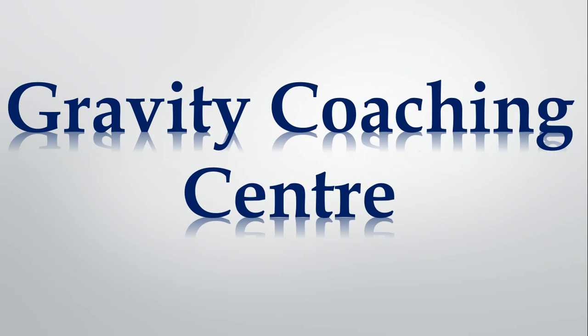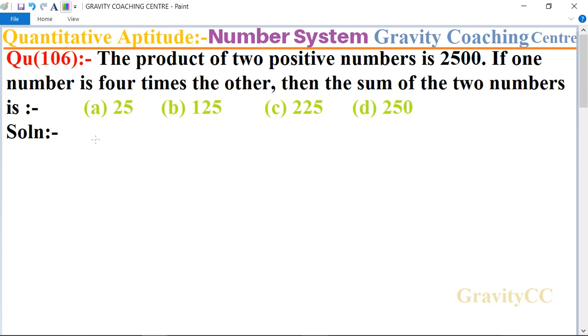Welcome to our channel Gravity Coaching Centre. Quantitative Aptitude, Chapter Number System, Question number 106: The product of two positive numbers is 2500. If one number is four times the other, then the sum of the two numbers is which option?